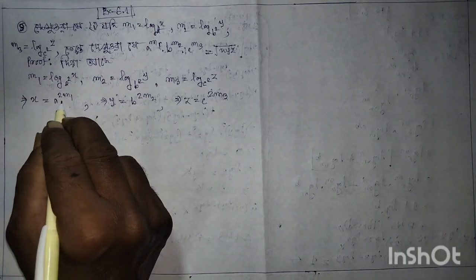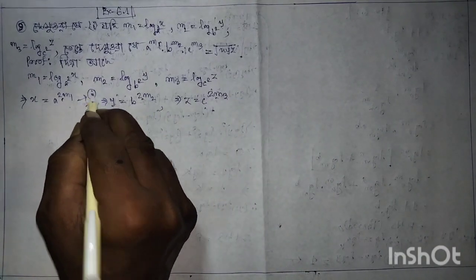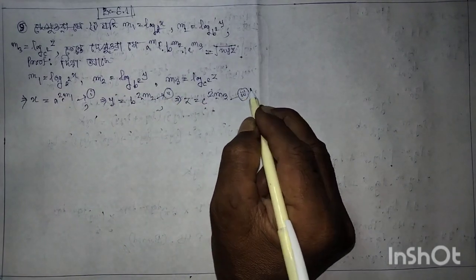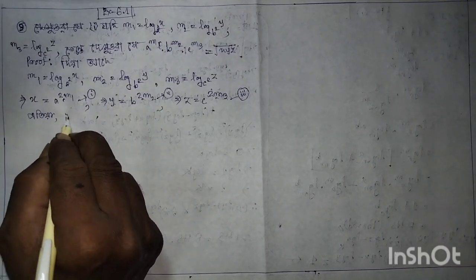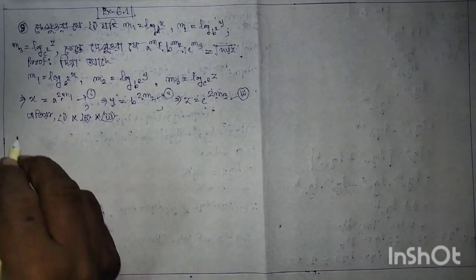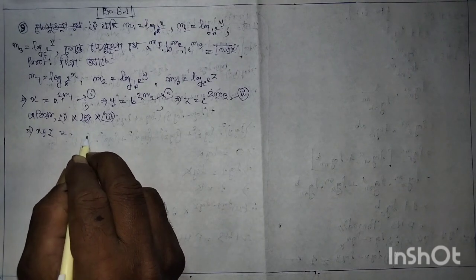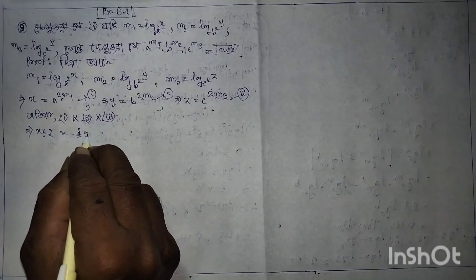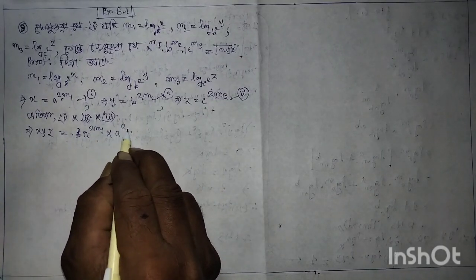This is equation 1, this is equation 2, this is equation 3. Equations 1, 2, and 3 imply x, y, z — multiplying all three expressions together.